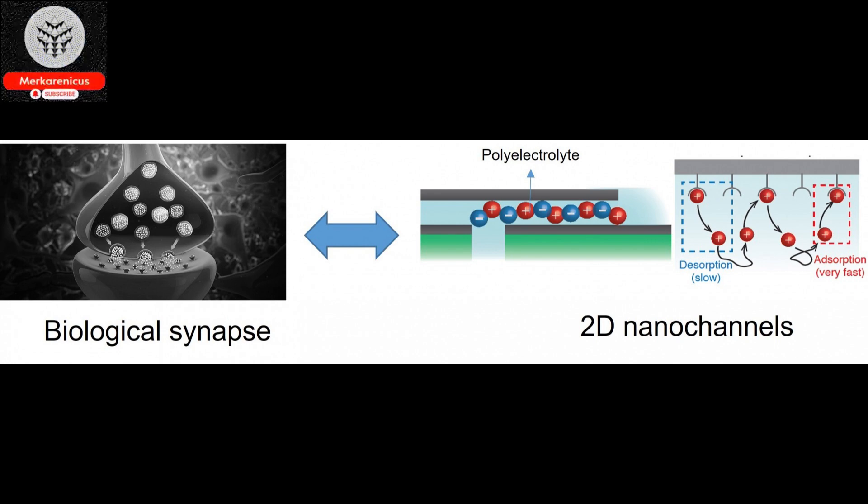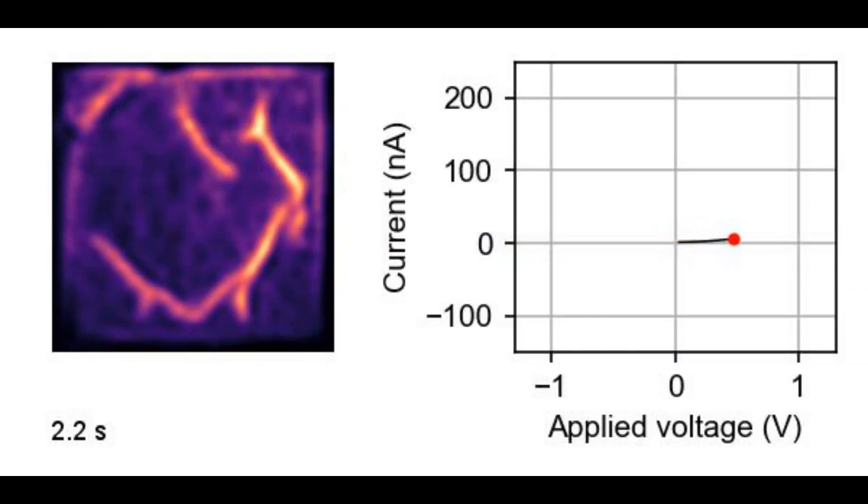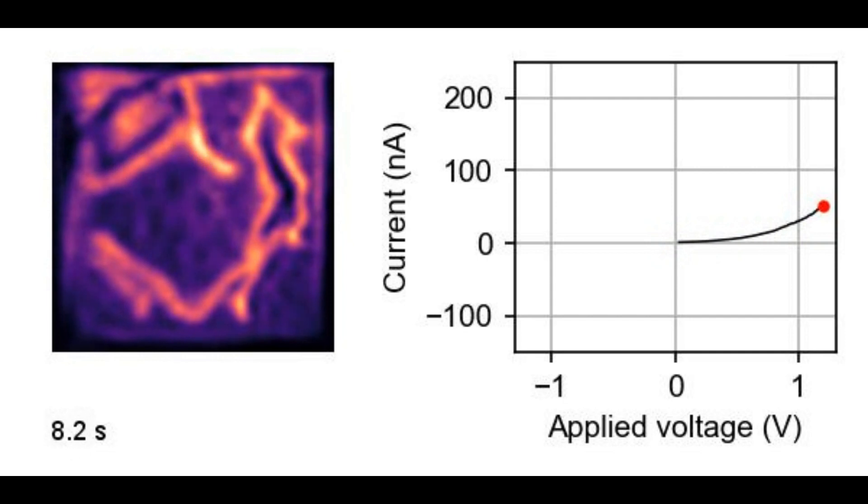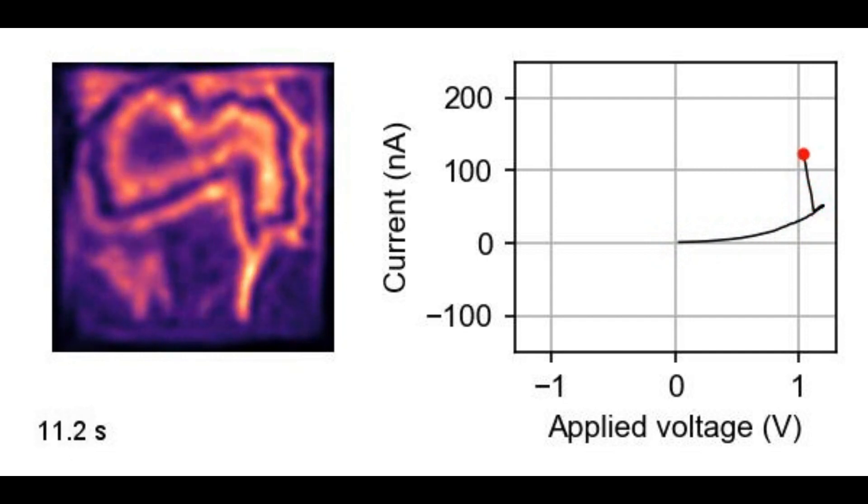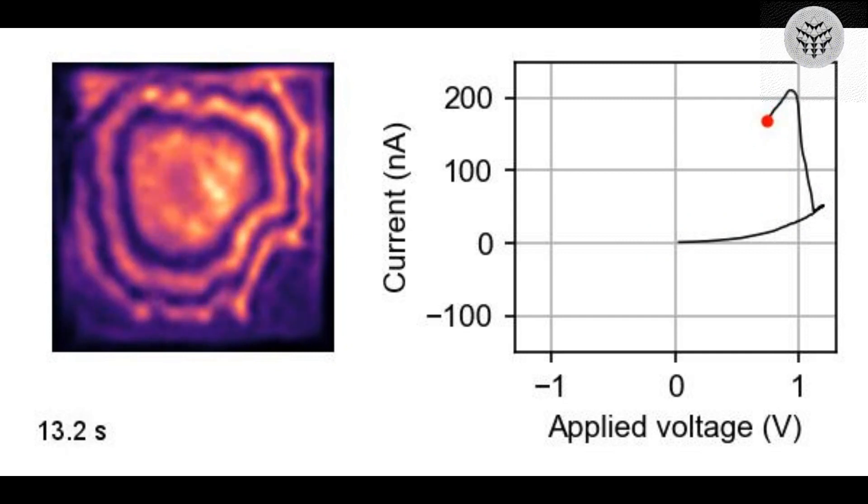While traditional electronic memristors rely on electrons and holes for digital processing, LBN's device utilizes potassium ions in an electrolyte water solution, although other ions like sodium and calcium could also be used.